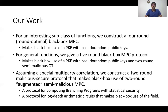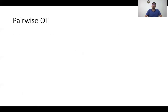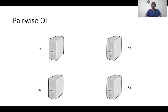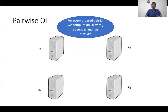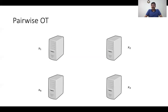In the rest of the talk, I mainly focus on our construction of a four-round protocol for an interesting subclass of functions. The functionality we consider is what we call the pairwise OT functionality. Consider multiple parties — in this pairwise OT functionality, for every ordered pair I and J, we compute an OT instance between I and J where J acts as the sender and I acts as the receiver. For instance, between the first and second party, we run an OT instance called OT12 where the first party acts as the receiver and the second party acts as the sender.